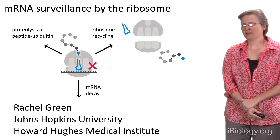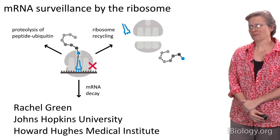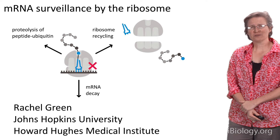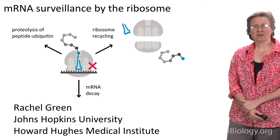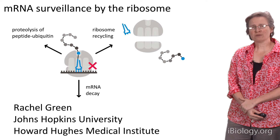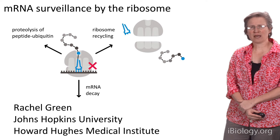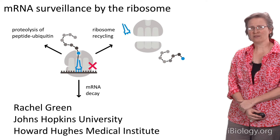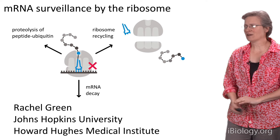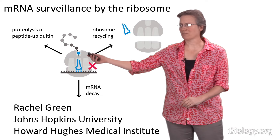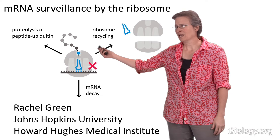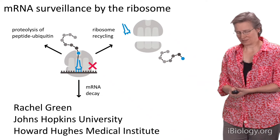Hi, my name is Rachel Green and I'm at the Johns Hopkins University School of Medicine at the Howard Hughes Medical Institute. What I'm going to share with you today is a story from my own lab, focusing on how the ribosome in eukaryotic cells identifies bad messenger RNAs to trigger a series of events that lead to degradation of the incomplete protein product, to messenger RNA decay, and to the recycling of the ribosome complex.